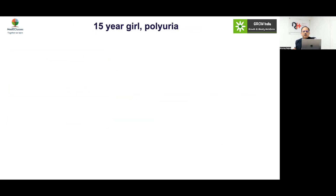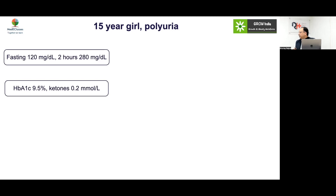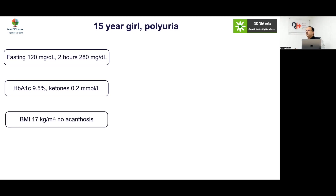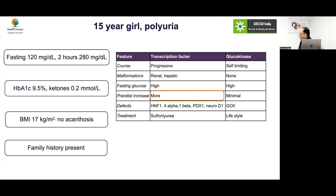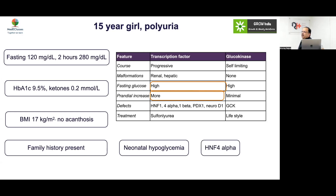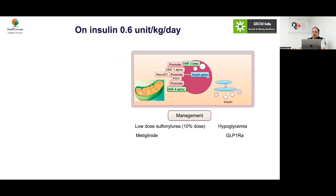Case: A 15-year-old non-ketotic, non-obese girl with polyuria, fasting glucose 120, 2-hour value very high, HbA1c 9.5%, family history present. The presence of family history alone does not finalize a MODY diagnosis — type 1 must be considered first. More prandial increase with elevated fasting glucose and a history of neonatal hypoglycemia suggests a transcription factor MODY — specifically HNF4 alpha — rather than a primary GCK-type MODY.